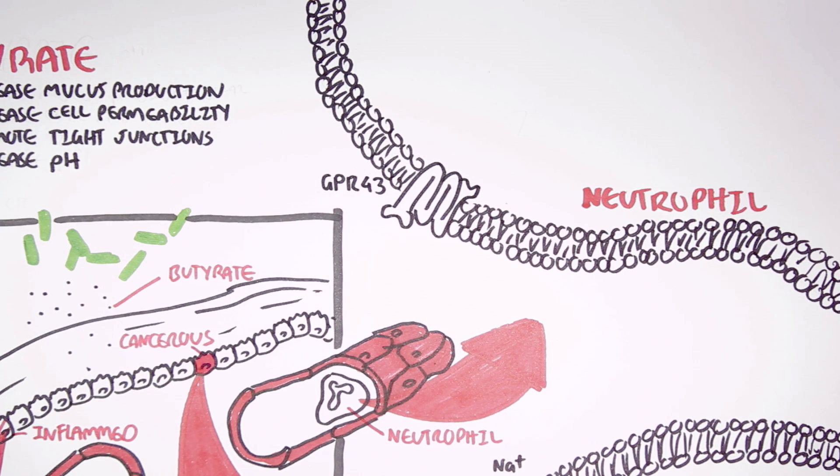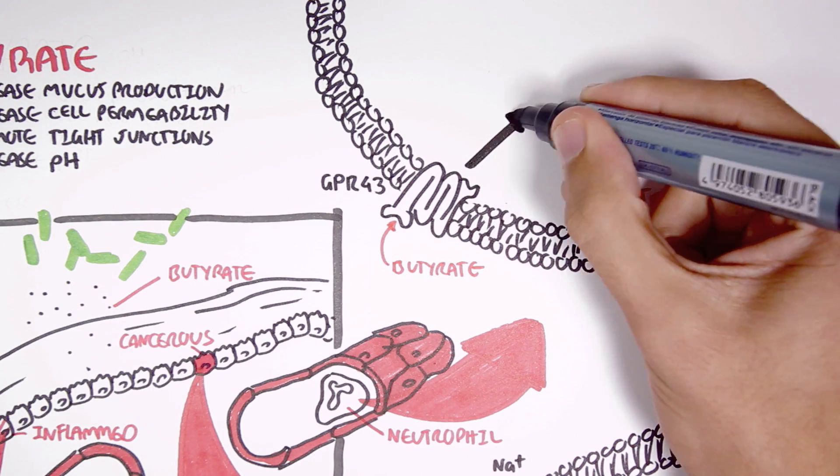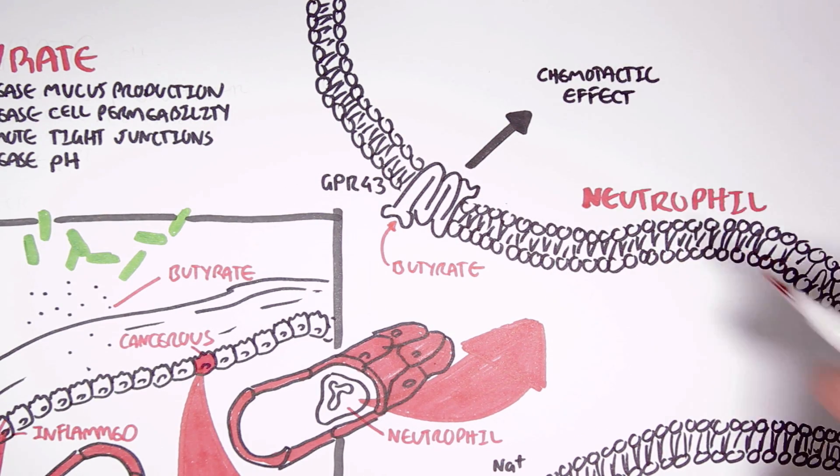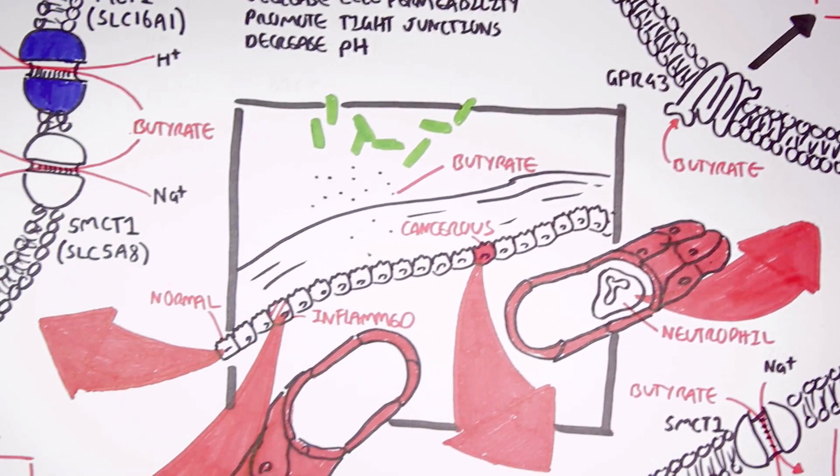By activating G protein receptor 43, butyrate has shown to have chemotactic properties, allowing more neutrophils to be recruited to the area of interest.